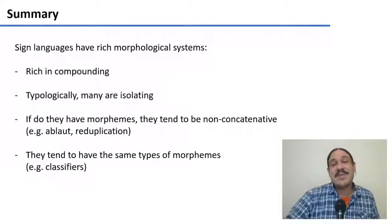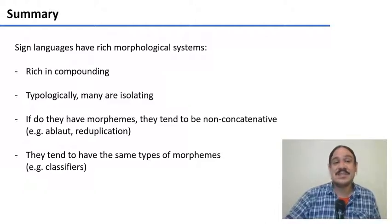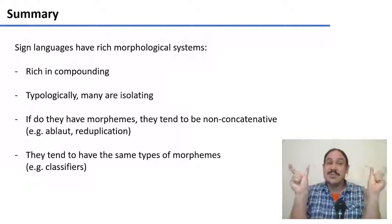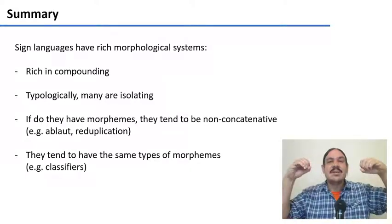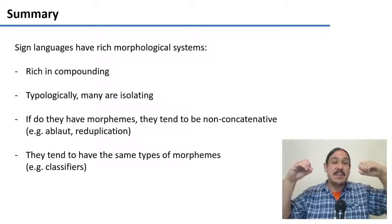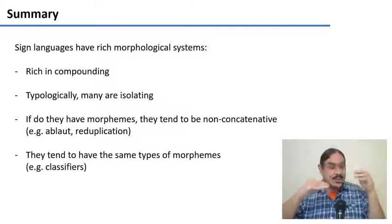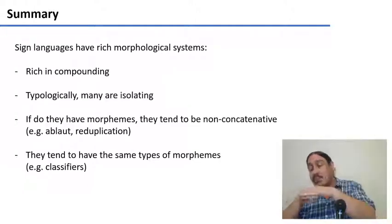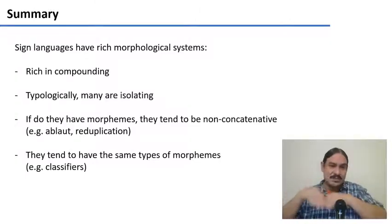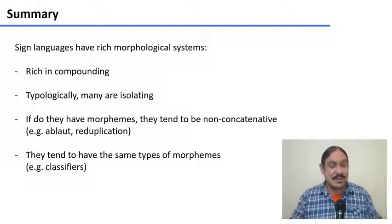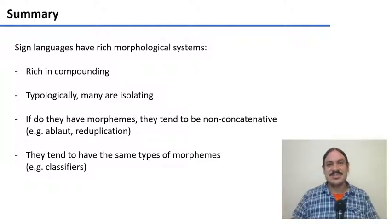So as we've seen, the same concepts we have studied apply to sign languages. Sign languages have compounds, and their compounds differ in phonological shape from free roots. Many of them isolate things like tenses, but when they do have roots and affixes, the configuration tends to be non-concatenative, like an ablaut — a root modified with other morphemes. We can have the same things as in spoken languages, like aspect, iterative aspect in ASL, and classifiers.